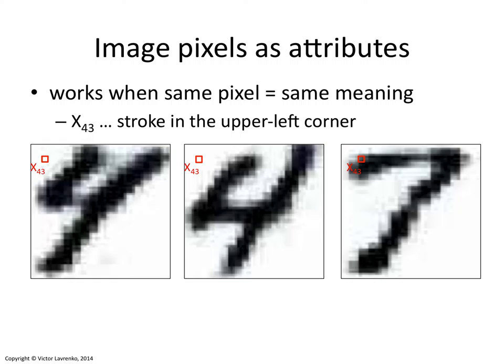For example, if you have a 4, you're less likely to have a stroke around pixel 43. And if you have a 7, you're much more likely to have a stroke there — to have a value of 1, to have some black in that place. Pixel 183 is a lot more likely for digit 4 and a lot less likely for digit 7. You expect there to be white space in that area for digit 7.